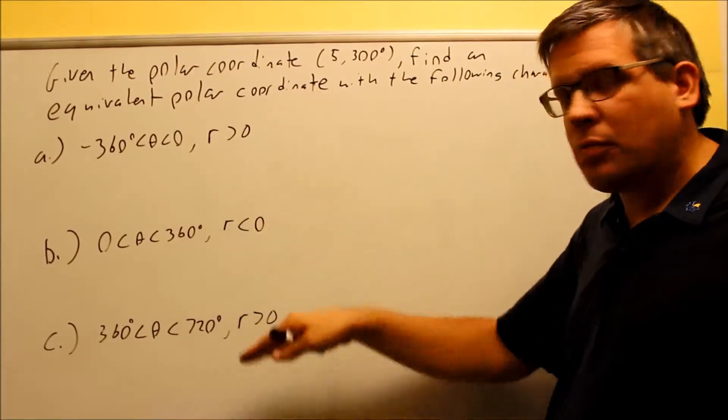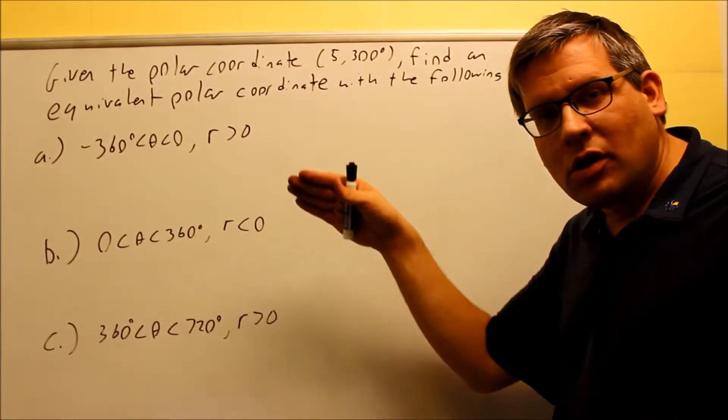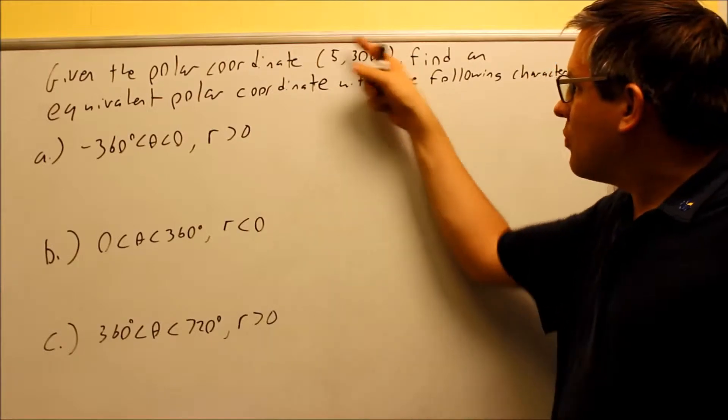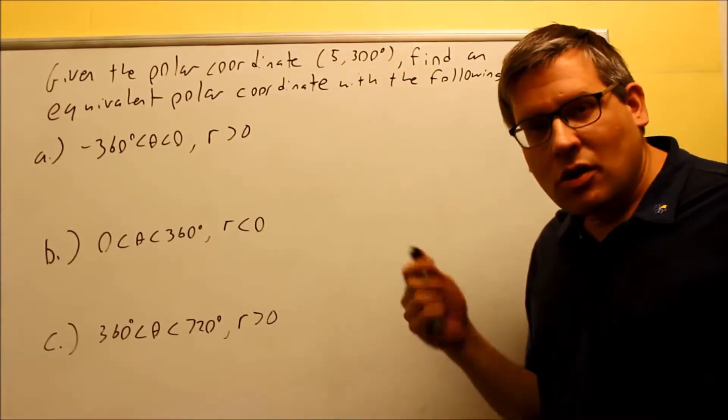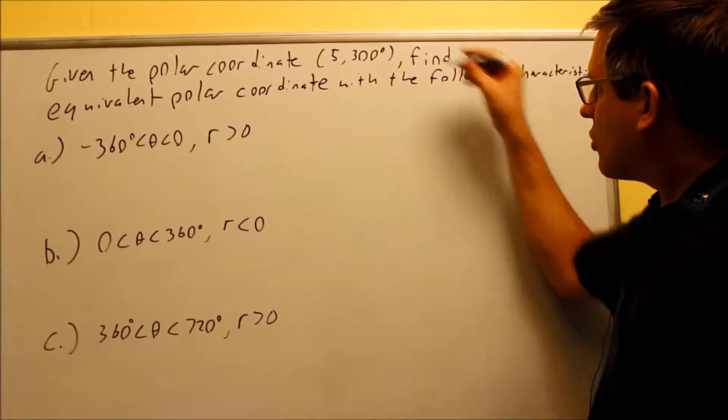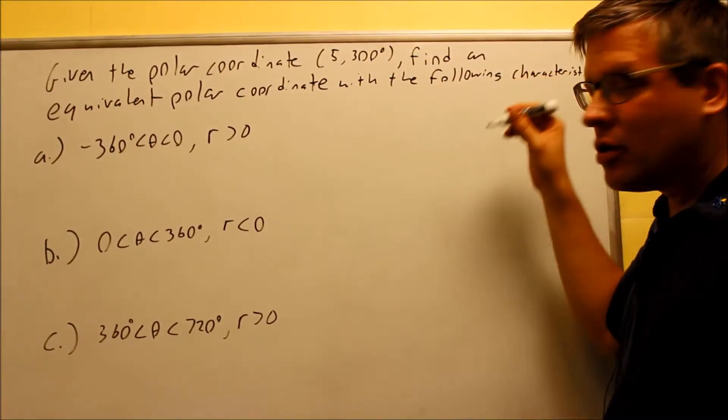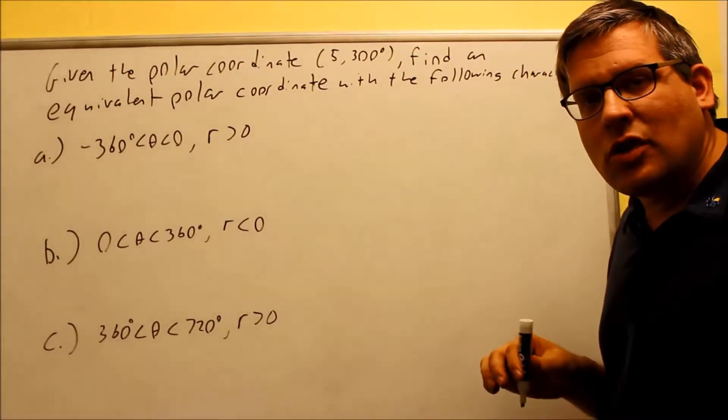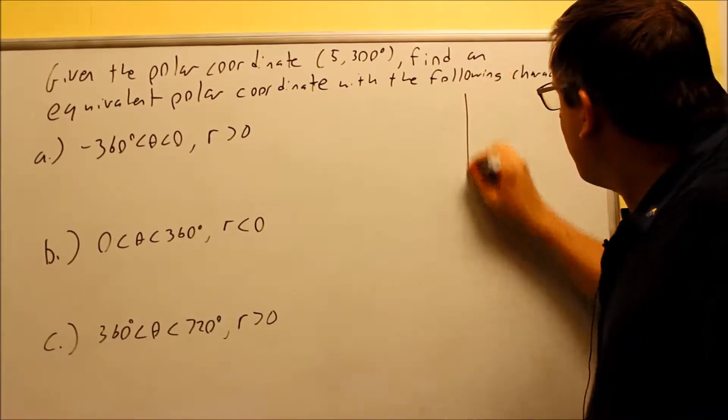So all three of these points we've come up with, all of them, if we plot them, should take us back to the same spot as this. So it probably would make sense to first make a quick sketch of this one here, 5 and 300, so that way we can check our answers to see if we arrive at the same spot that we started from.